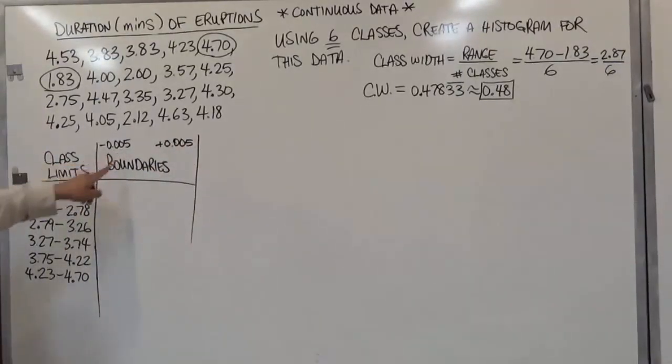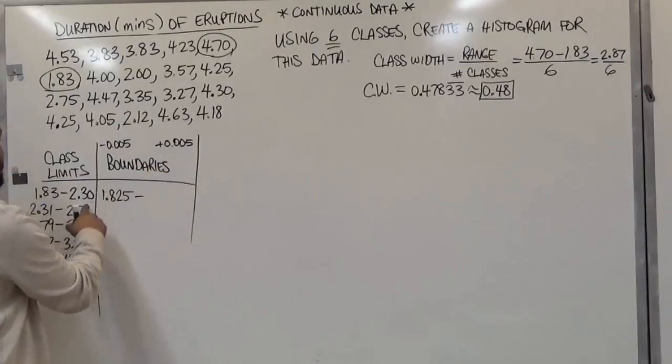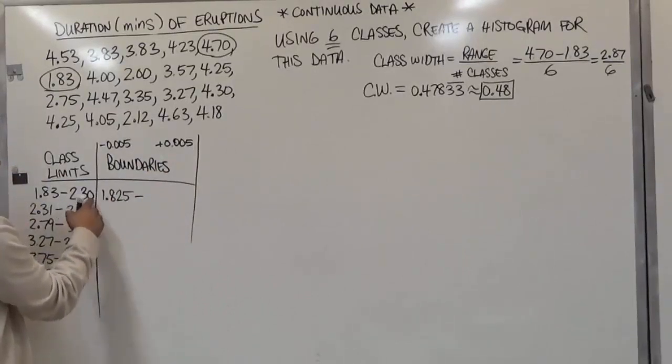And so now what we're doing then is just subtracting this from this, and this is going to become 1.825. On the right-hand side, we just add the five to the last digit here, so it's going to be 2.305.